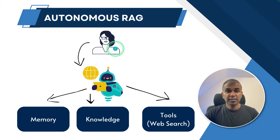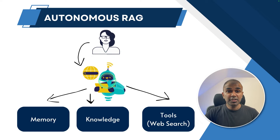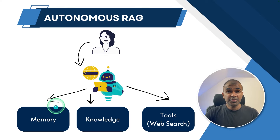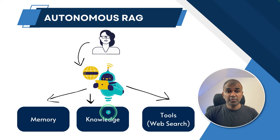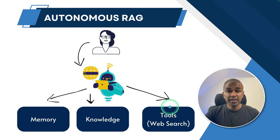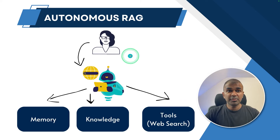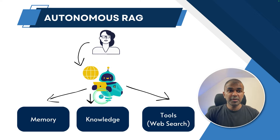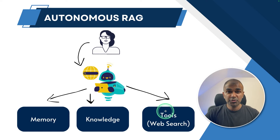In regards to auto RAG, when the user asks a question, the large language model is going to decide whether to use the memory — that is like the previous history — or to search the vector database, which is the current knowledge based on the provided file or URL. If the large language model is not able to get enough information from memory or knowledge, it's going to use tools such as a web search tool to get that information and finally respond with the relevant information to the user. So the ability for the large language model to decide whether to use memory, knowledge, or tools is called auto RAG.